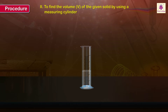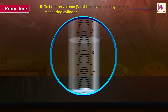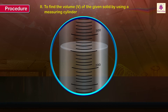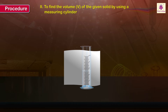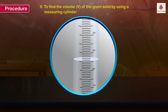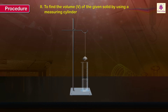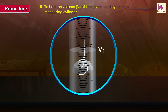To find the volume of the given solid: Fill the measuring cylinder with water, taking care to see that no air bubbles are trapped in the water in the cylinder. Read the initial volume of the water V1, which is equal to 250 milliliters. Hold a white paper behind the cylinder if necessary so that the water level and graduations are clearly seen. Suspend the object from the clamp so that it is fully immersed in the water in the cylinder. Read and record the final volume V2, which is equal to 270 milliliters.